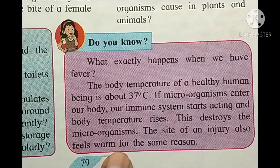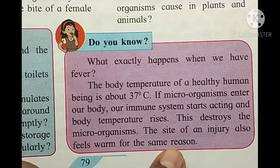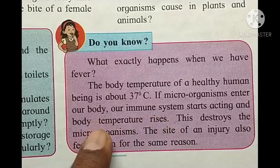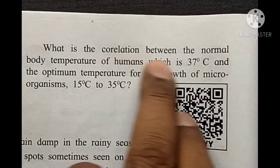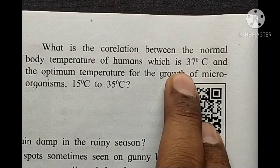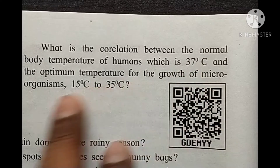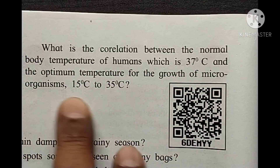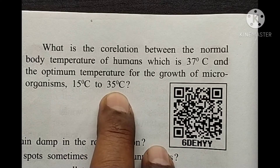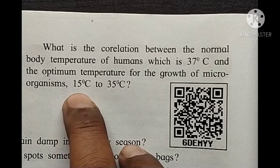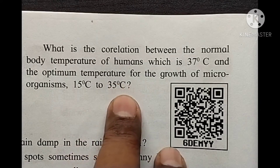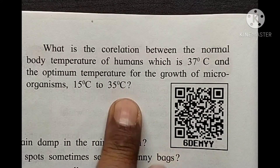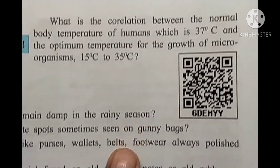The site of an injury also feels warm for the same reason. The normal body temperature of a healthy human is about 37 degrees Celsius. The optimum temperature for the growth of microorganisms is between 15 degrees Celsius and 35 degrees Celsius, which explains why fever helps the body fight infection.